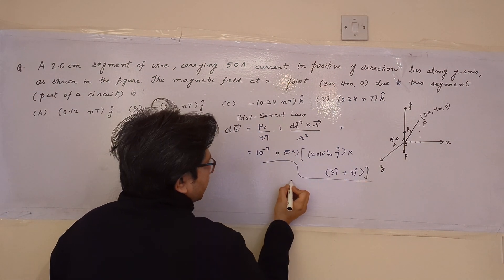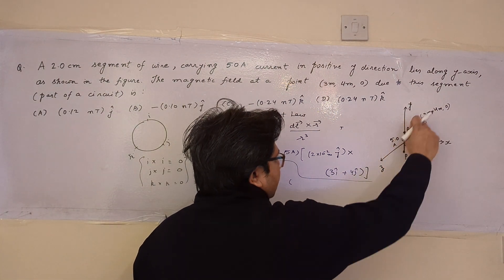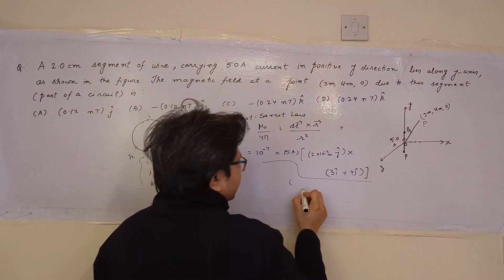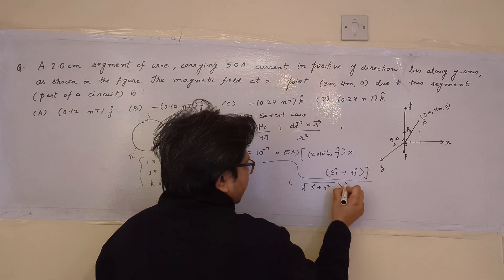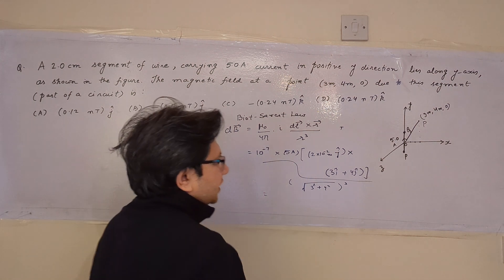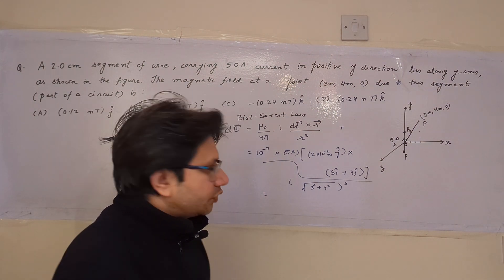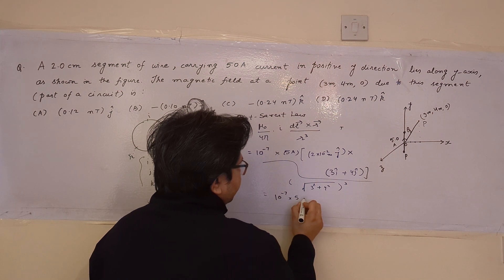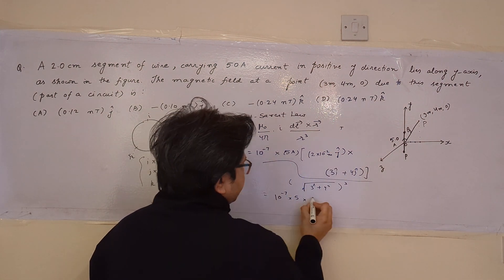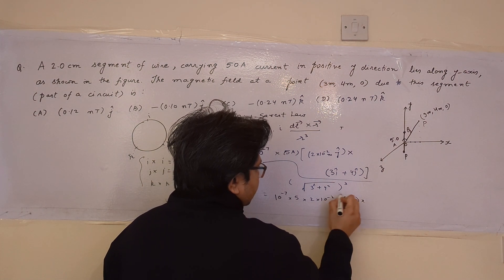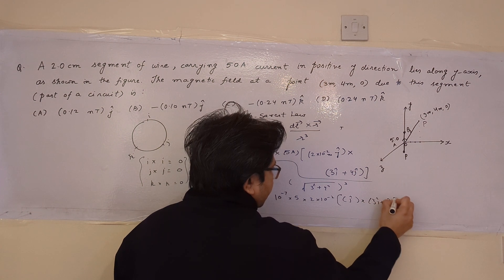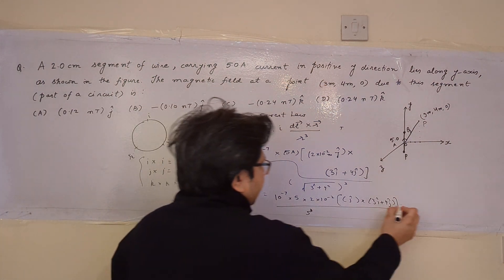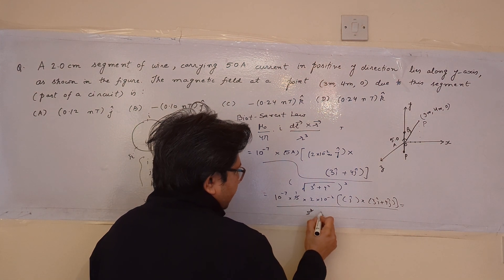In the denominator we have r³, where r is the modulus of the position vector OP = 3î + 4ĵ. The modulus is √(3² + 4²) = √(9 + 16) = √25 = 5. So r = 5, and r³ = 5³ = 125. One factor of 5 from the numerator cancels with r³, leaving r² = 5² = 25 in the denominator.